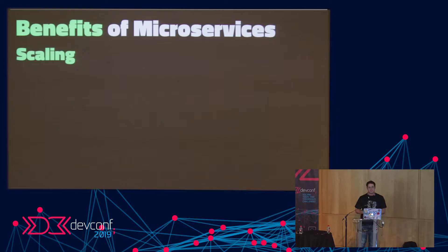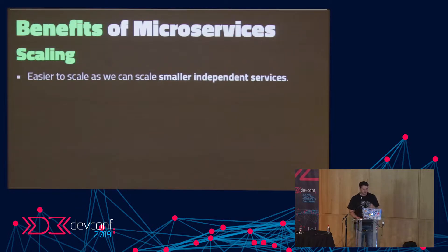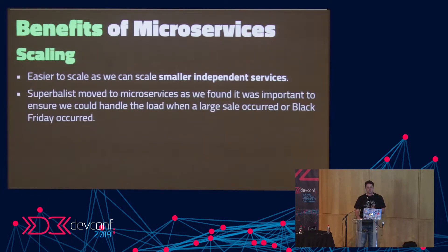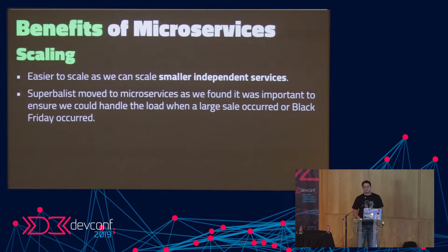Another benefit is scaling. When you scale a monolith, you have to scale the entire system. Microservices are easier to scale because we can scale smaller independent services instead of one big monolith. For Superblist, we moved to microservices because while load during normal times is perfectly fine, you end up with anomalies on huge sale days, payday, or Black Friday — suddenly traffic spikes to 12 times what you expected. With the monolith, it was quite hard to prepare for that.